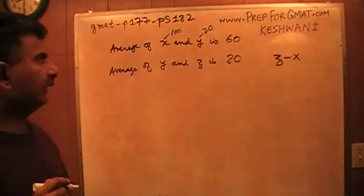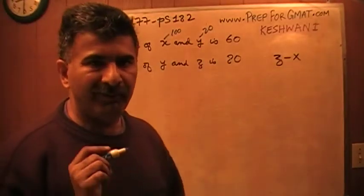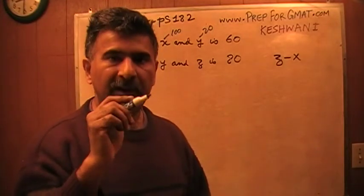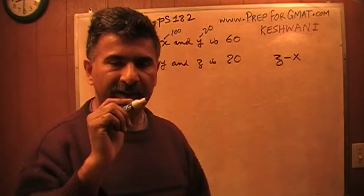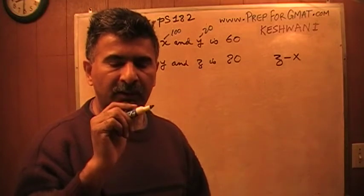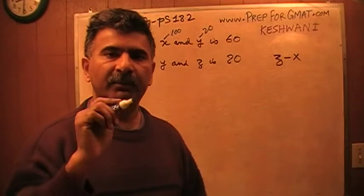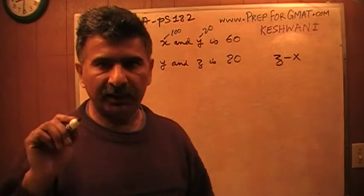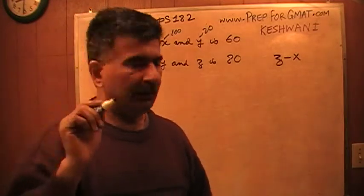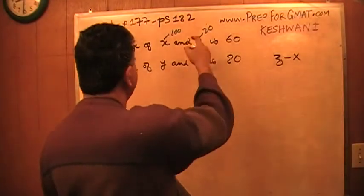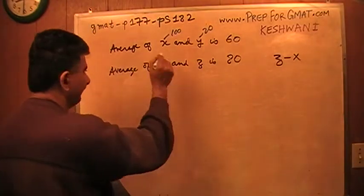Now the thing with the plugging in technique is that once you have plugged in the value for the variable in the problem, where it appears first, it has to have the same value, that variable has to have the same value throughout the problem. So if that variable appears on five different occasions, you cannot keep changing the value. That's the whole point. So here I've made Y to be 20. That 20 has to come over here. That's the part you have to keep in mind.